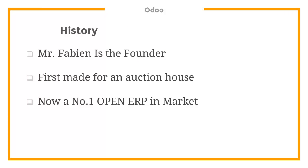Mr. Fabian is the founder behind this ERP, and it has a very interesting story. His father had a small auction house business, so first he made this software for his father's auction house. At that time it was a small software, but now Odoo is the number one open ERP on the market — it is a big application suite ERP.